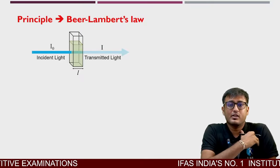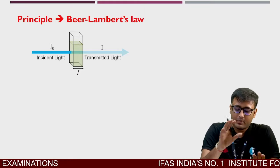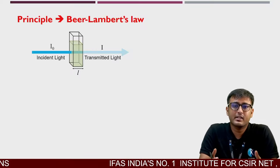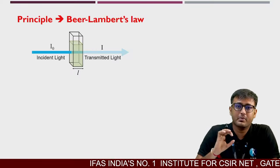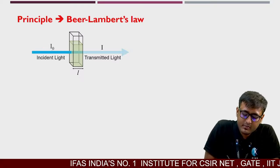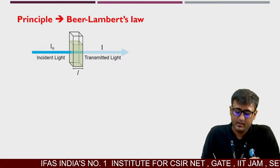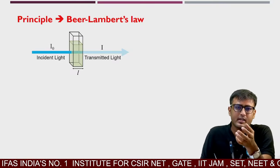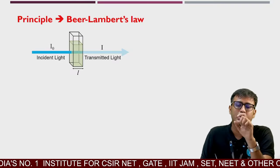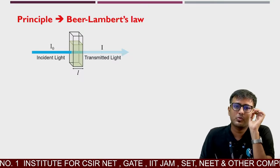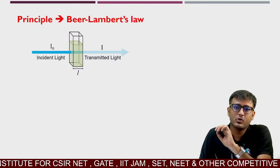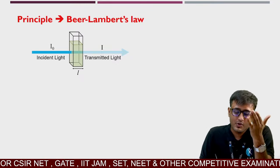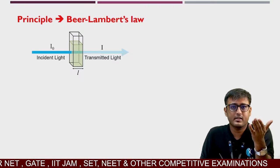Coming to the main principle, students yahan zyada confuse hote hain. Ek light source hai jo intensity hum de rahe hain ek particular cuvette ya sample ko — woh intensity hum I₀ maan ke chalte hain (incident light). Cuvette ya sample ke andar kuch solute rahenge, solute ki wajah se kuch na kuch particular light absorb hogi, aur baaki transmit hogi. Transmitted light ko hum capital I se represent karte hain, aur path length of the cuvette ko L se.